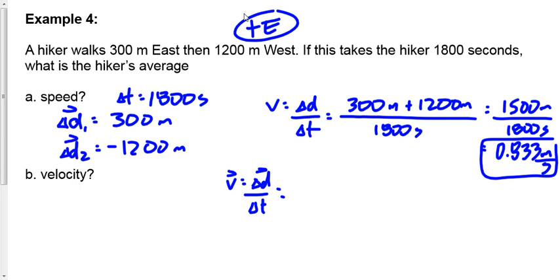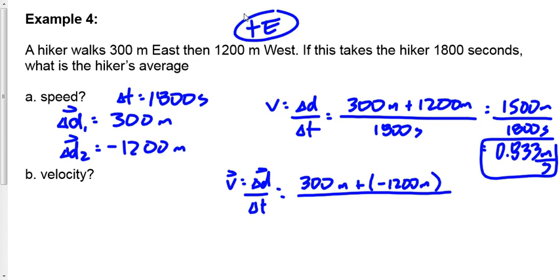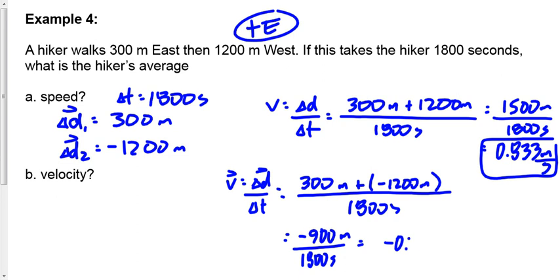For average velocity, we add displacements: 300 + (−1200) = −900 meters, divided by 1800 seconds, giving −0.500 meters per second. The negative means west. You could write 0.500 m/s west, or just negative 0.500.